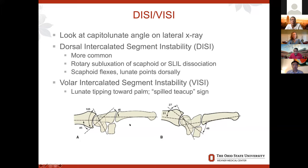Your normal angle for scapholunate is about 47 degrees. When you're getting beyond 60 degrees of extension, you're looking at more of a DISI deformity. Likewise, when you're going below 30 degrees, you're looking at a VISI.